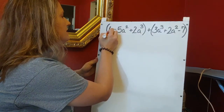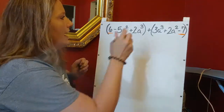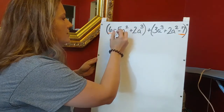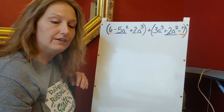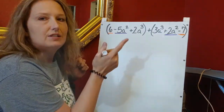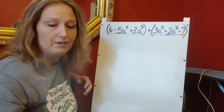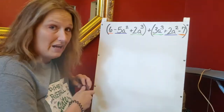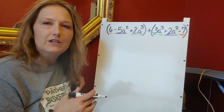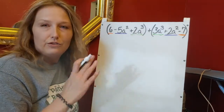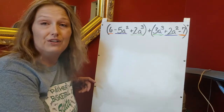I have constants — that's six and that negative seven. Those are constants. I have some a-squared terms: negative five a-squared and two a-squared — those are like terms. And then lastly I have some cubes: two a-cubed and three a-cubed, those are like terms also. And really all I'm doing is combining my like terms. Anytime we write these in standard form, it's always going to go from the highest exponent down.